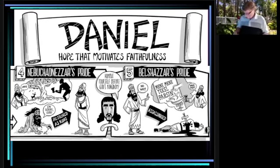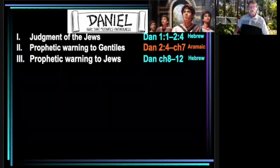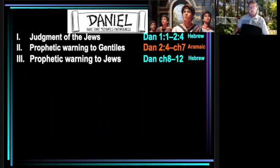As we know, if we just do a little review, the book of Daniel can be divided into three parts: the judgment of the Jews, prophetic warning to the Gentiles, and prophetic warning back to the Jews. Those are sections written in different languages — Hebrew, then Aramaic, then Hebrew again. We've concluded the judgment of the Jews, essentially the fall of Jerusalem in the first chapter, and we are now in the Aramaic section. We've done chapters 2 and 3, and now we're going to hit chapter 4.